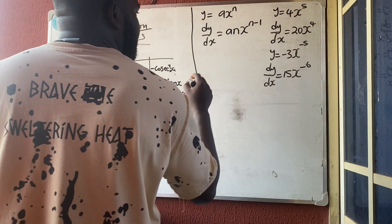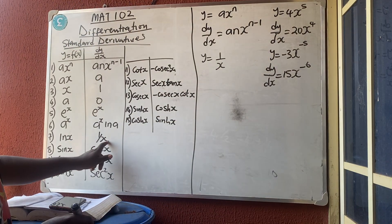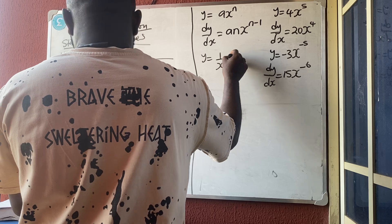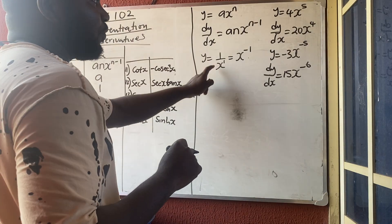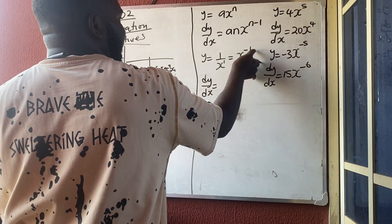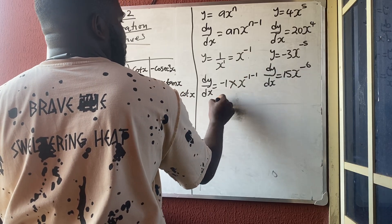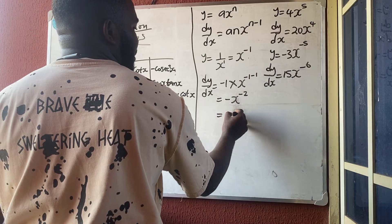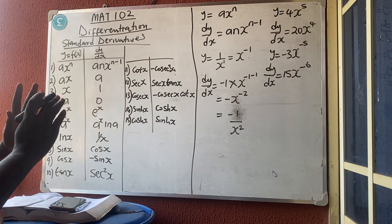The next case: if y = 1/x, recall from indices that 1/x = x^(−1). Applying the power rule: dy/dx = (−1)·x^(−1−1) = −x^(−2), which we write as −1/x². So understanding indices is essential here.